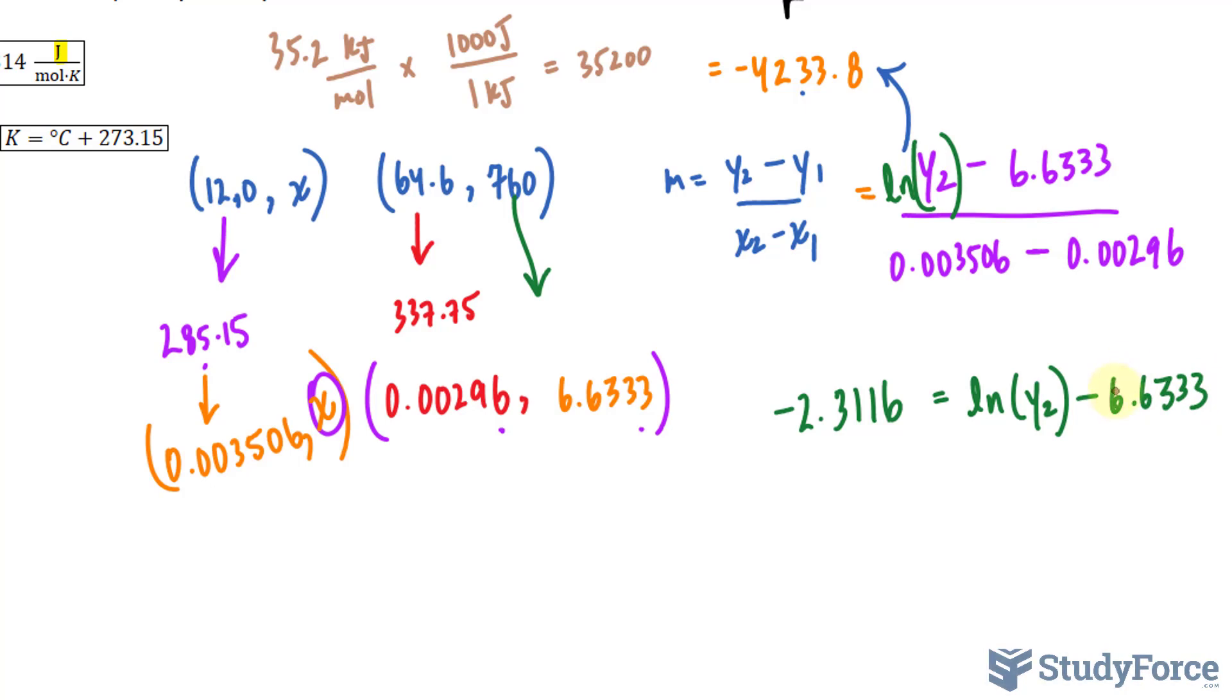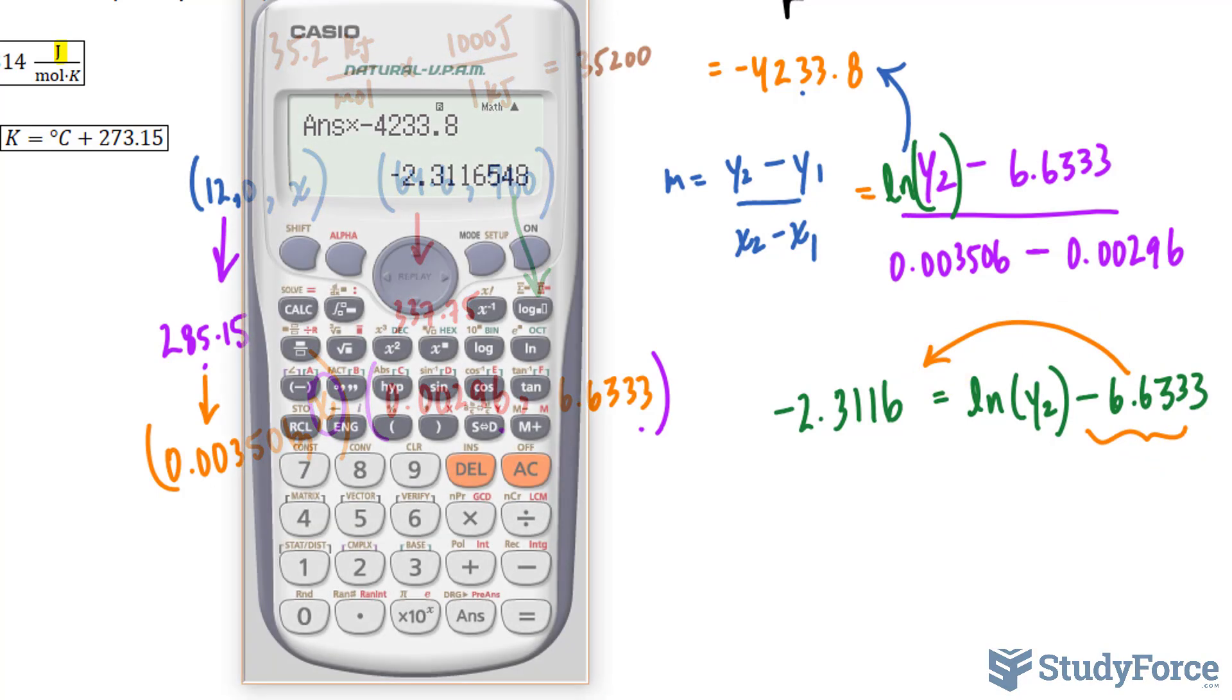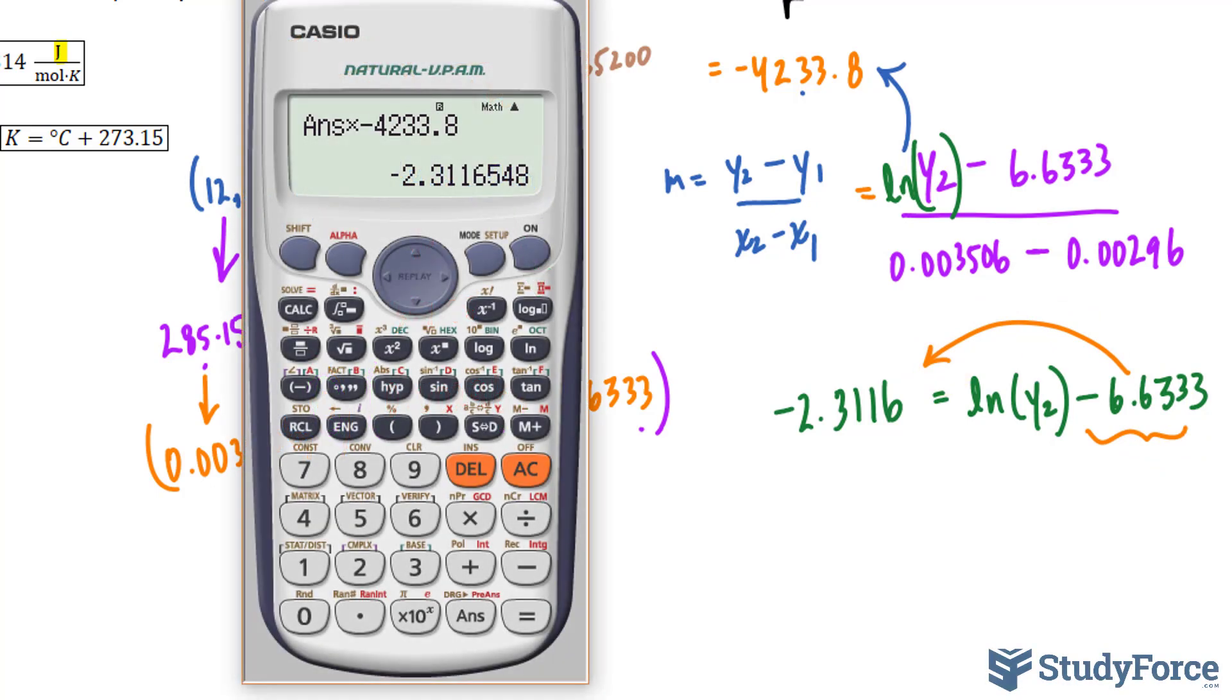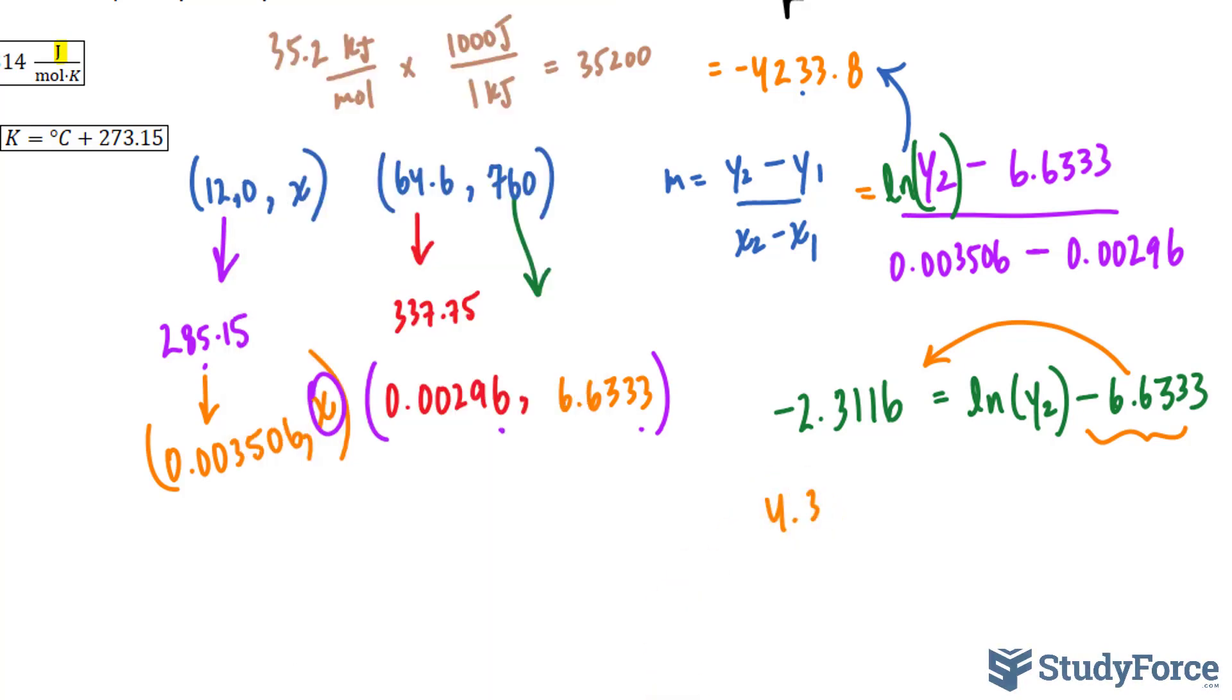Now I'll move this number over here, and all I will have left is ln y2 on the right side. Negative 2.3116 plus 6.6333, and now on the left side I have 4.3216 equals ln y2.